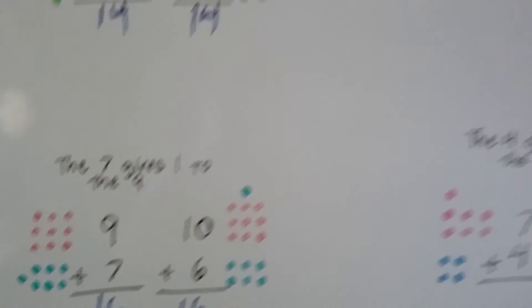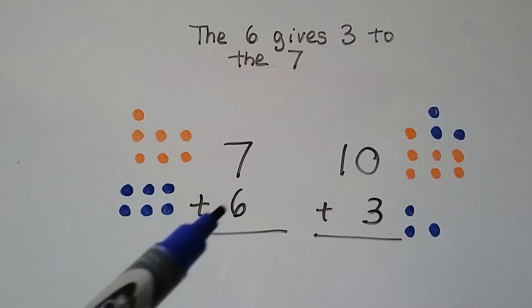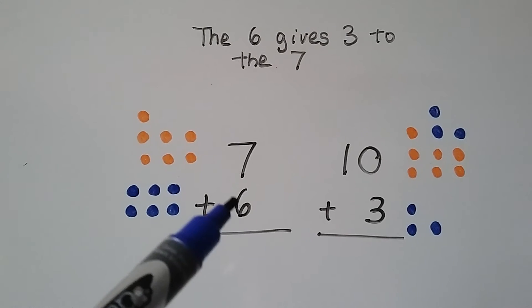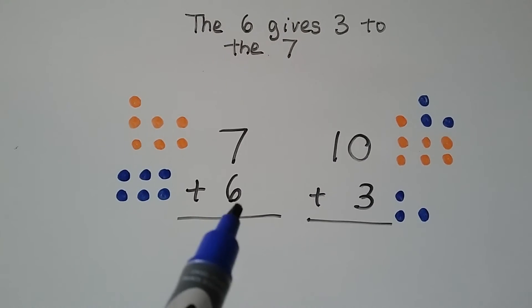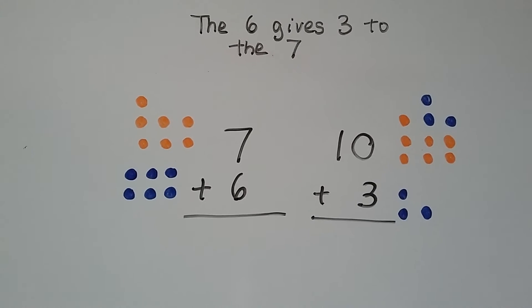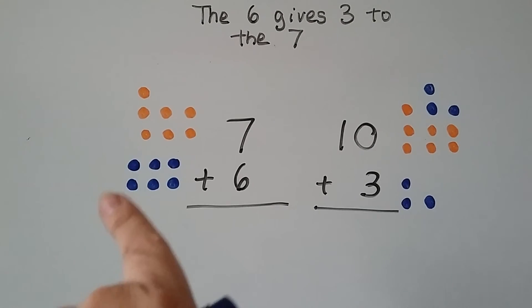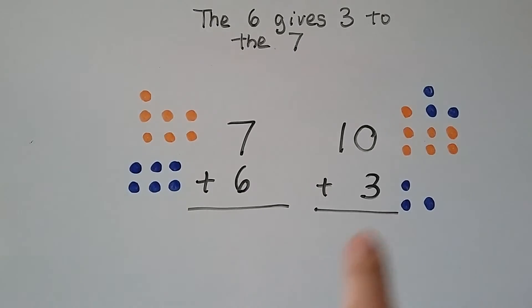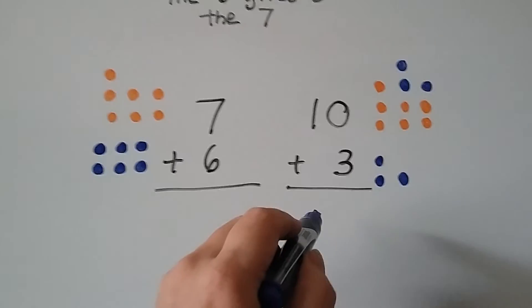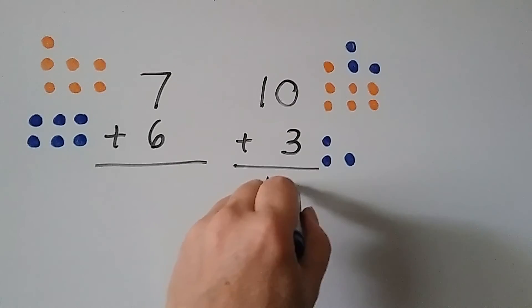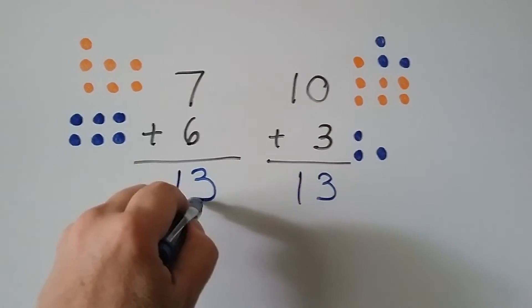Let's try it again. We have 7 plus 6. This 6 is going to give 3 to the 7 so that it's a 10, and now it becomes a 3 because we took the 3 away. We take 3 away, give it to the 7, and that'll become a 10. 10 plus 3 is 13, so 7 plus 6 must be 13.